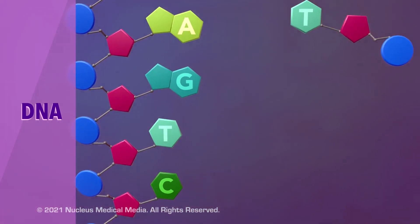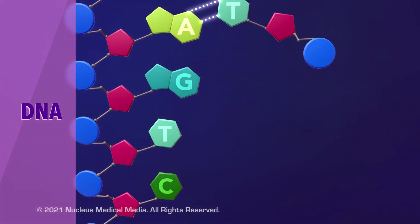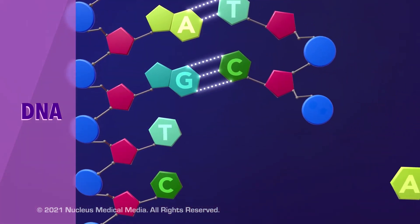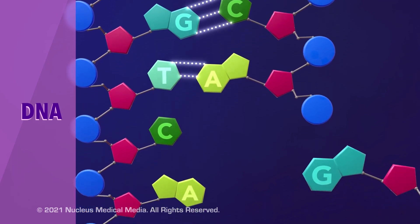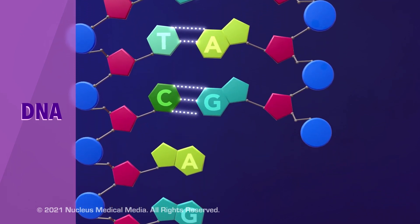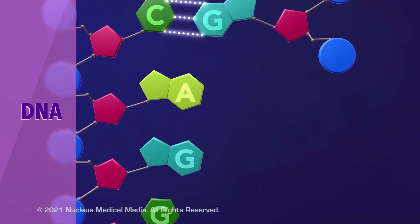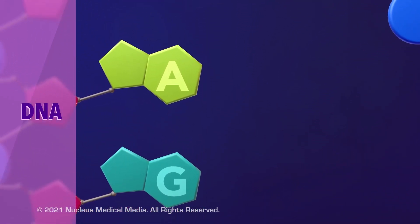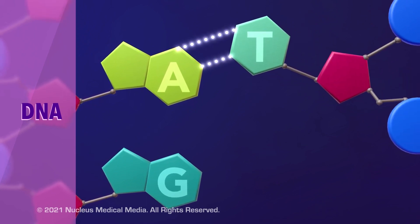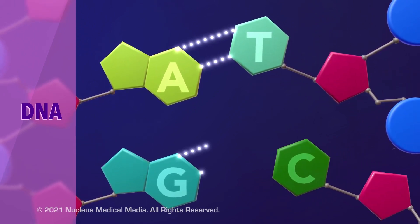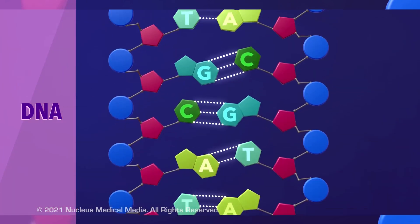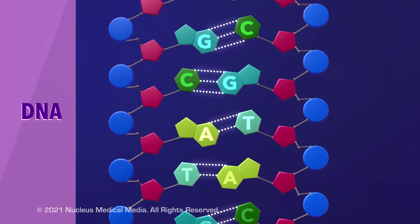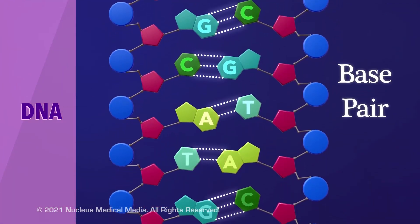When nucleotide bases connect through hydrogen bonds, the bases always pair up with the same partners. Adenine only pairs with thymine, and guanine only pairs with cytosine. This is called the base pair rule.